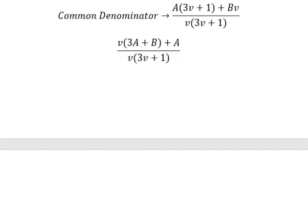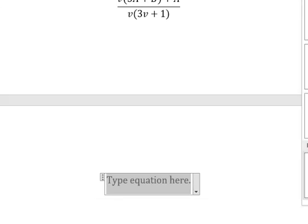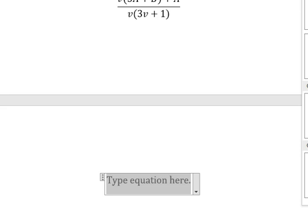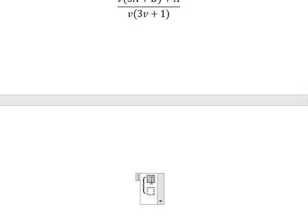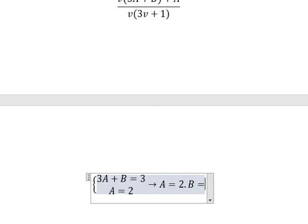We have the system of equations. 3a plus B equals to number 3, and A equals to number 2. So we have the solution of A and B. A equals to number 2, B equals to negative number 3.